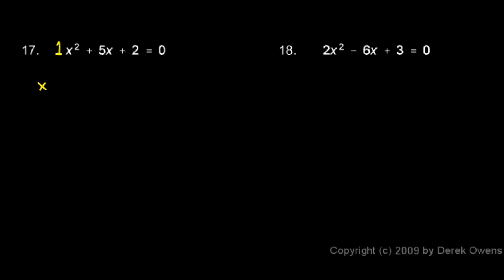So x will be negative b plus or minus the square root of b squared minus 4 times a times c, and all of that is over 2a, which is just 2.